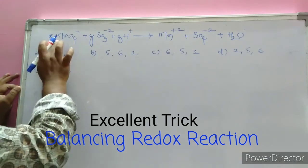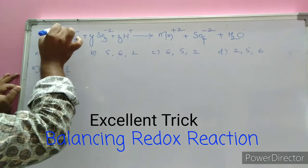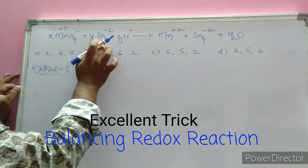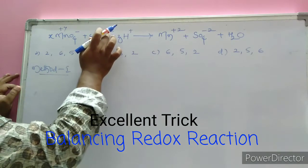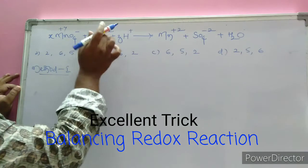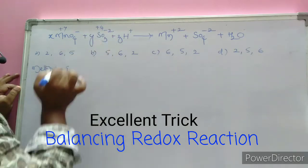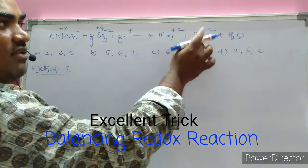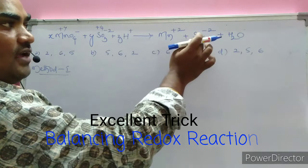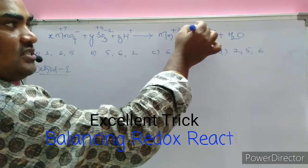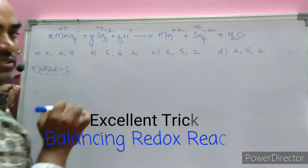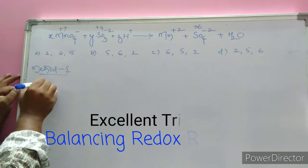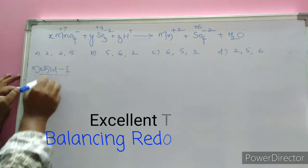Method one: the oxidation state of manganese in MnO4⁻ is +7. In sulfite ion, the oxidation state of sulfur: x minus 6 equals minus 2, so x equals +4. Manganese is given as +2, and in sulfate ion: x minus 8 equals minus 2, so x equals +6.